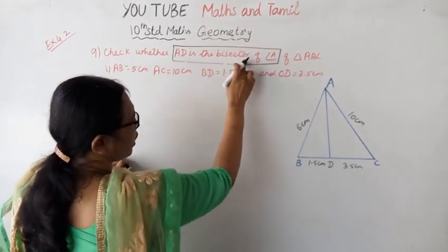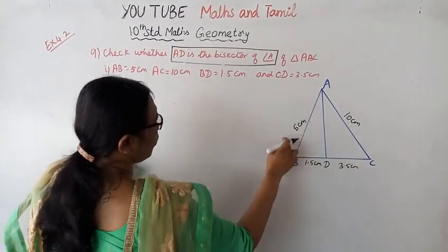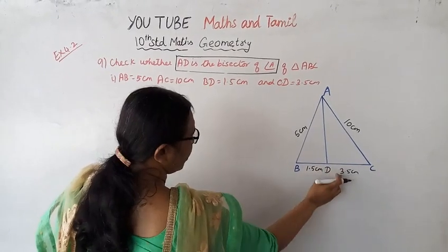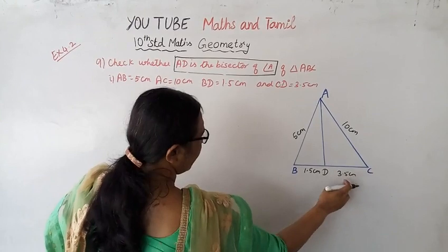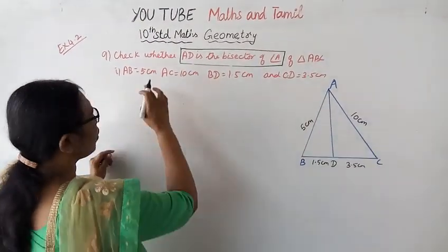We're checking if AD is the bisector of angle A of triangle ABC. The given measurements are: AB equals 5 cm, AC equals 10 cm, BD equals 1.5 cm, and CD equals 3.5 cm.